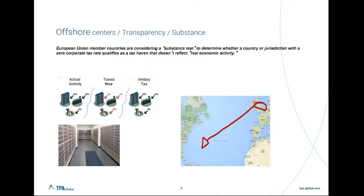The classic example is the non-FTE or shelf companies or letterbox companies resident in — this arrow is pointing to Bermuda — where you have lots of offices that really exist only as letterboxes. As you can see in the drawing, actual activity in the tax haven country is perhaps only 2%. In the current pre-BEPS setup, it would be 98% of profits being directed towards the tax haven.